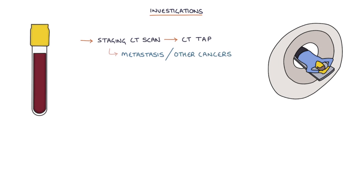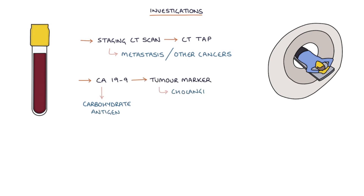The tumour marker to remember for cholangiocarcinoma is CA19-9 — CA stands for carbohydrate antigen. This marker may be raised in cholangiocarcinoma, but it is also raised in pancreatic cancer and a number of other malignant and non-malignant conditions, so it is not very specific.